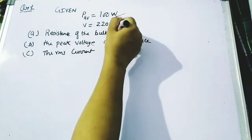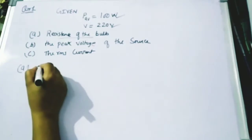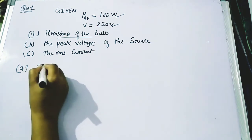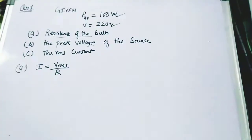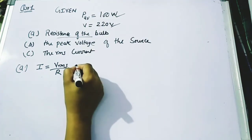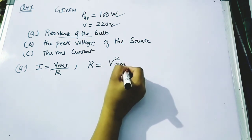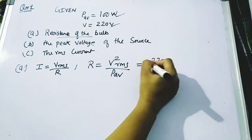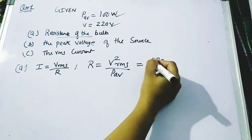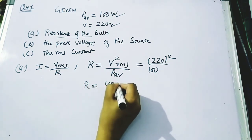We are given P_average and V_RMS. To calculate the resistance of the bulb, we use the formula R = V²_RMS / P_average. Substituting the values: R = (220)² / 100 = 484 ohm. This is the resistance value of the bulb.